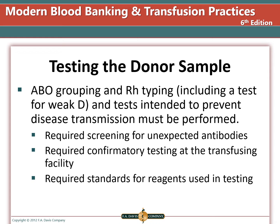When testing a donor sample, the ABO and RH type including weak D must be performed. An antibody screening is required. The tests for blood-borne pathogens must be completed that meet the regulatory requirements. Reagents and test kits must be FDA licensed for donor testing, as some tests are approved for patient but not donor testing.